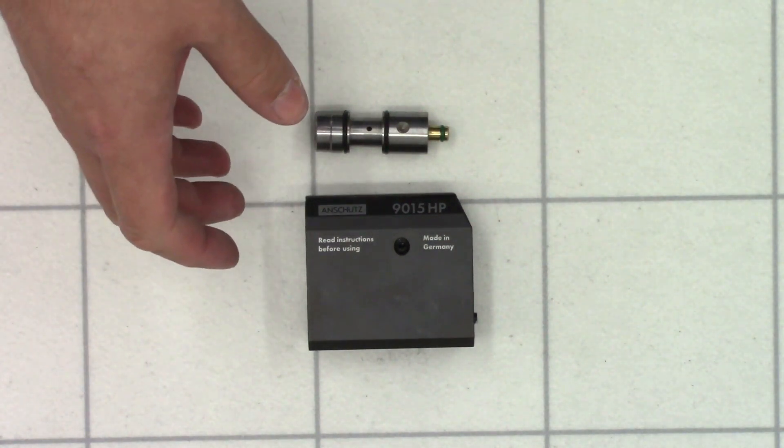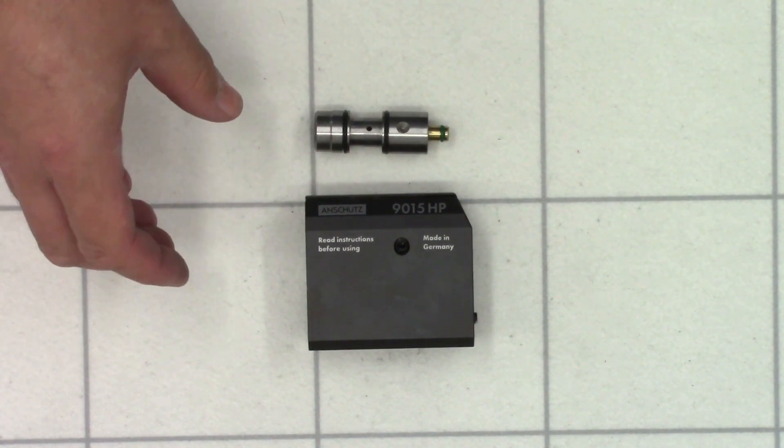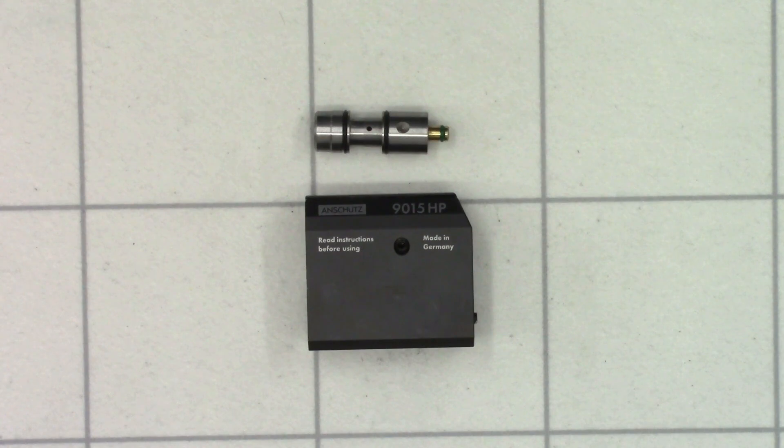Now this is obviously a target gun so we're not interested in getting 100 or so foot-pounds. We just need 12 in order to keep it nice and under the sub 12 foot-pound limit.